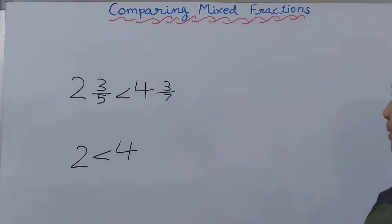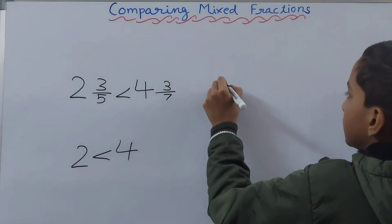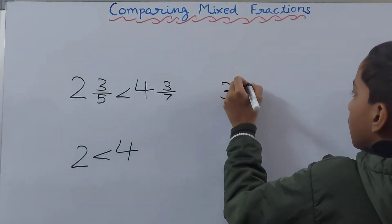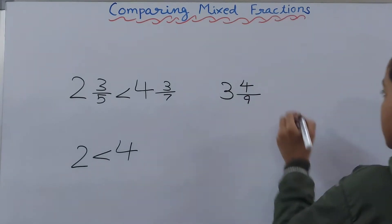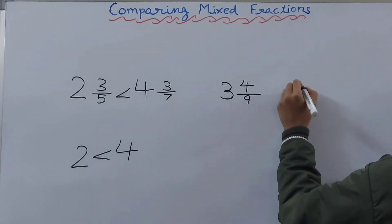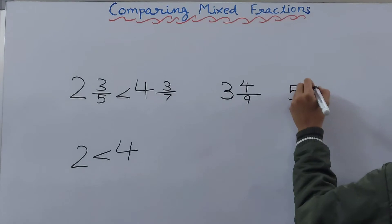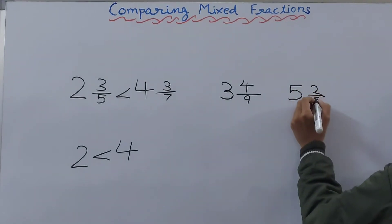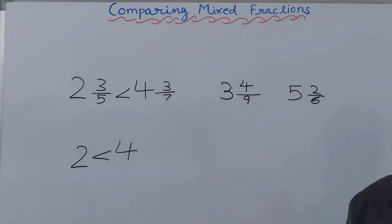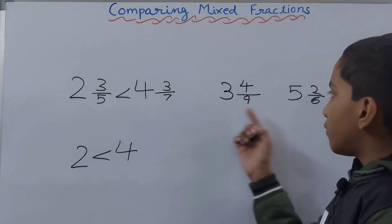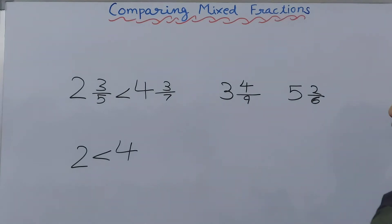Let's take one more example with two more fractions. Let's take three whole and four upon nine, and five whole and two upon six. Again, we have to compare these fractions, so look for the whole numbers and compare them.